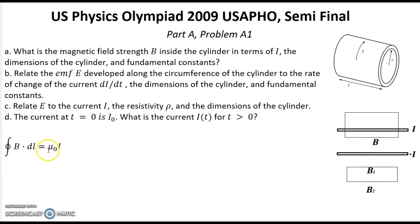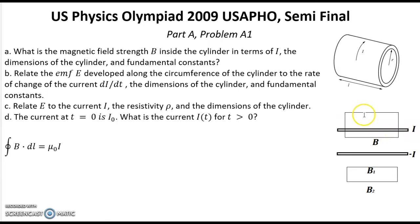Now let's find the magnetic field inside this cylinder. We use the same Ampere's law formula. Due to symmetry, the magnetic field inside the cylinder is the same along this line, and we multiply this magnetic field by the length L. That must equal mu zero multiplied by current I, since this current I passes through this figure. From this formula we can find the magnetic field at any point inside the cylinder. So the magnetic field equals this expression, as for a regular solenoid. That was the answer for question A.